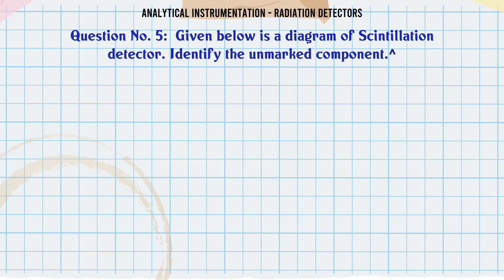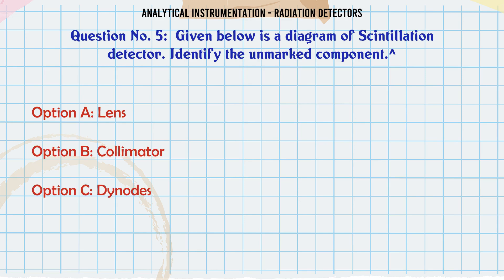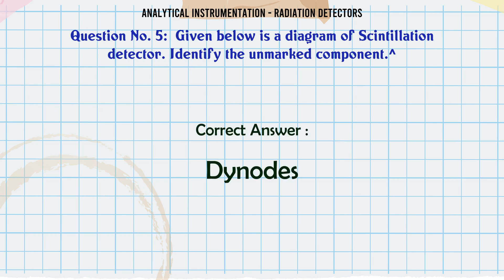Given below is a diagram of a scintillation detector. Identify the unmarked component. A. Lens. B. Collimator. C. Dynodes. D. Focusing cup. The correct answer is Dynodes.